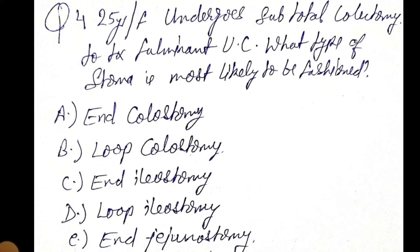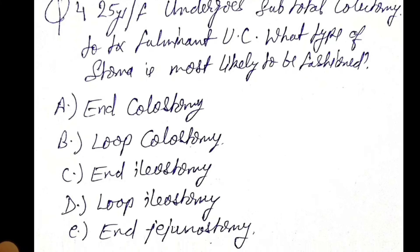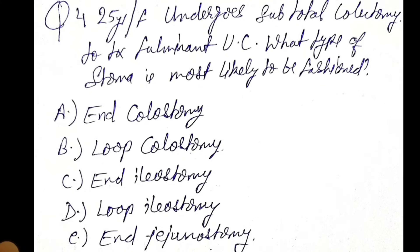Let's start this session. A 25-year-old female undergoes subtotal colectomy to treat fulminant ulcerative colitis. What type of stoma is most likely to be fashioned here? Options: end colostomy, loop colostomy, end ileostomy, loop ileostomy, or end jejunostomy.